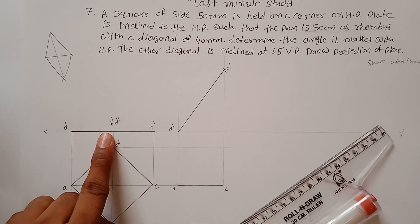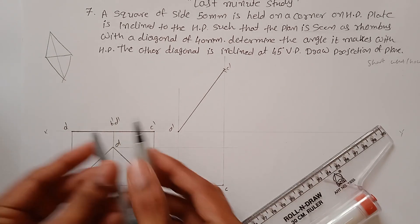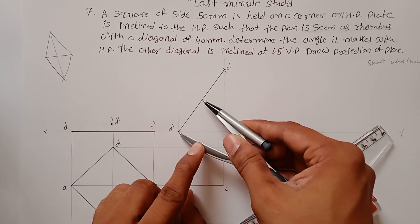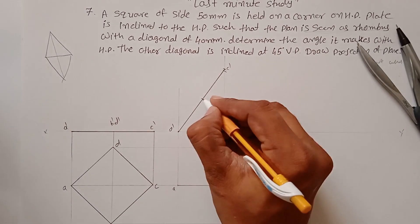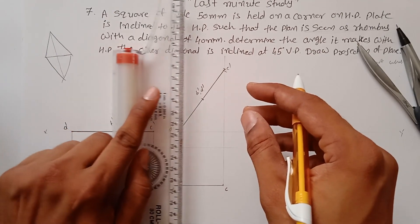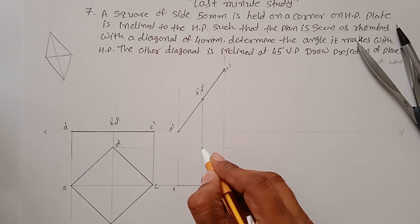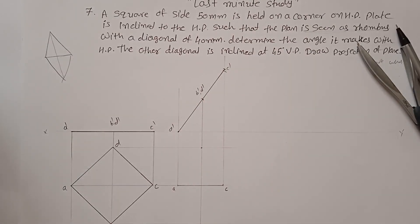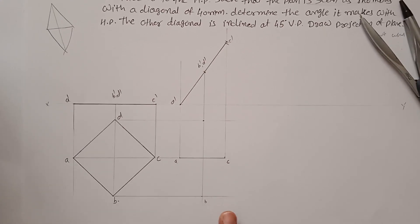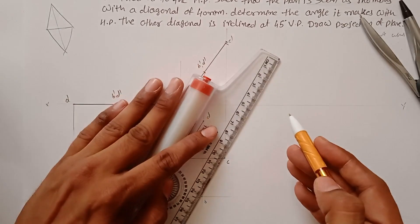We also need B dash D dash. Measure this distance from A dash and mark it over here — this point is your B dash D dash. Now transfer these points using projections. You get the intermediate points: this is point B and this is point D. Now join them and you can see it constructs a shape that looks like a rhombus.